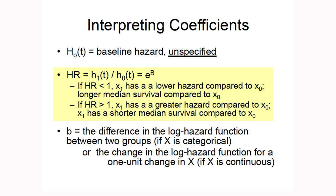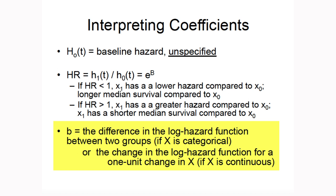With Cox proportional hazards regression, we exponentiate the coefficients to get hazard ratios. A hazard ratio is the relative hazard between groups, interpreted similarly to a rate ratio or odds ratio. If it's less than one, the group of interest has a lower hazard — a lower instantaneous risk of death — compared to the reference group, and a longer median survival. If the hazard ratio is greater than one, the group of interest has a higher instantaneous risk of dying compared to the reference group. The coefficients tell us the difference in the log hazard function between two groups if x is categorical, or the change in the log hazard for a one unit change in x if x is continuous.